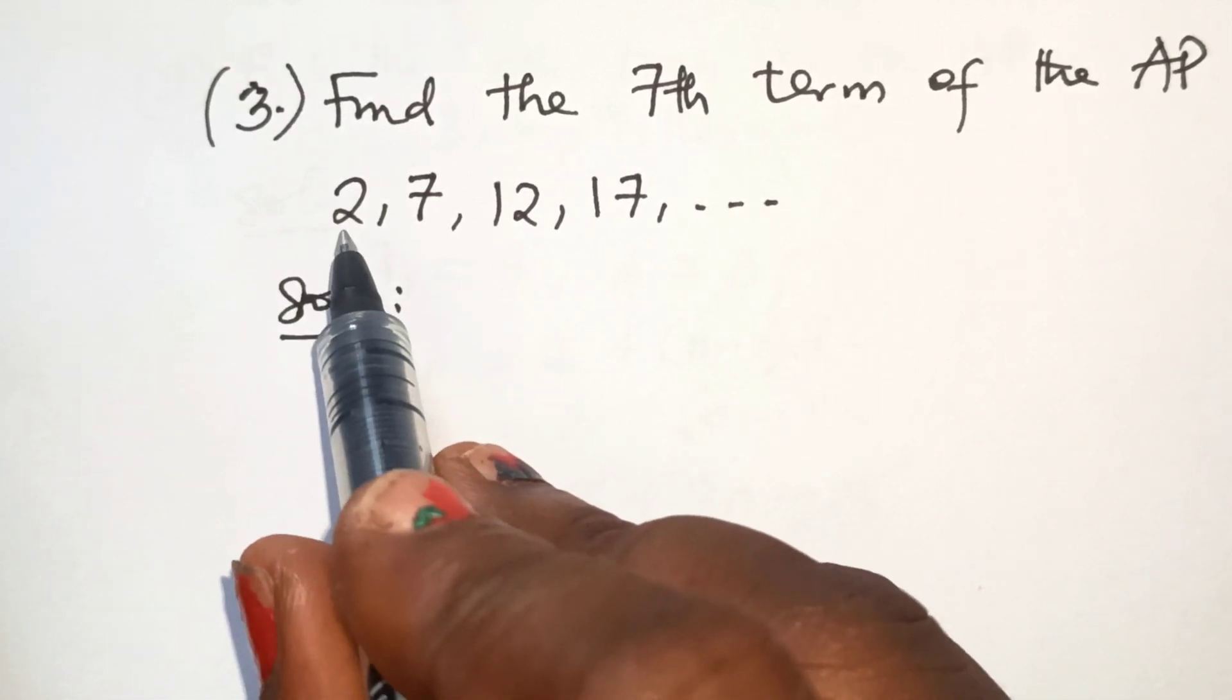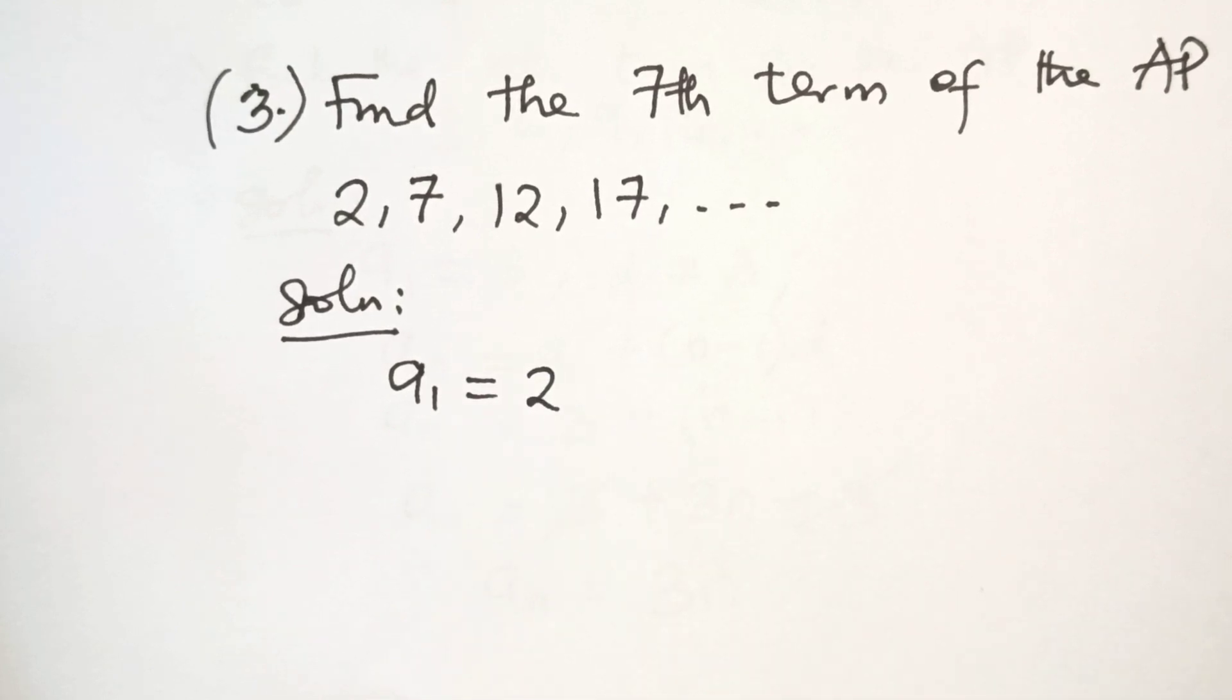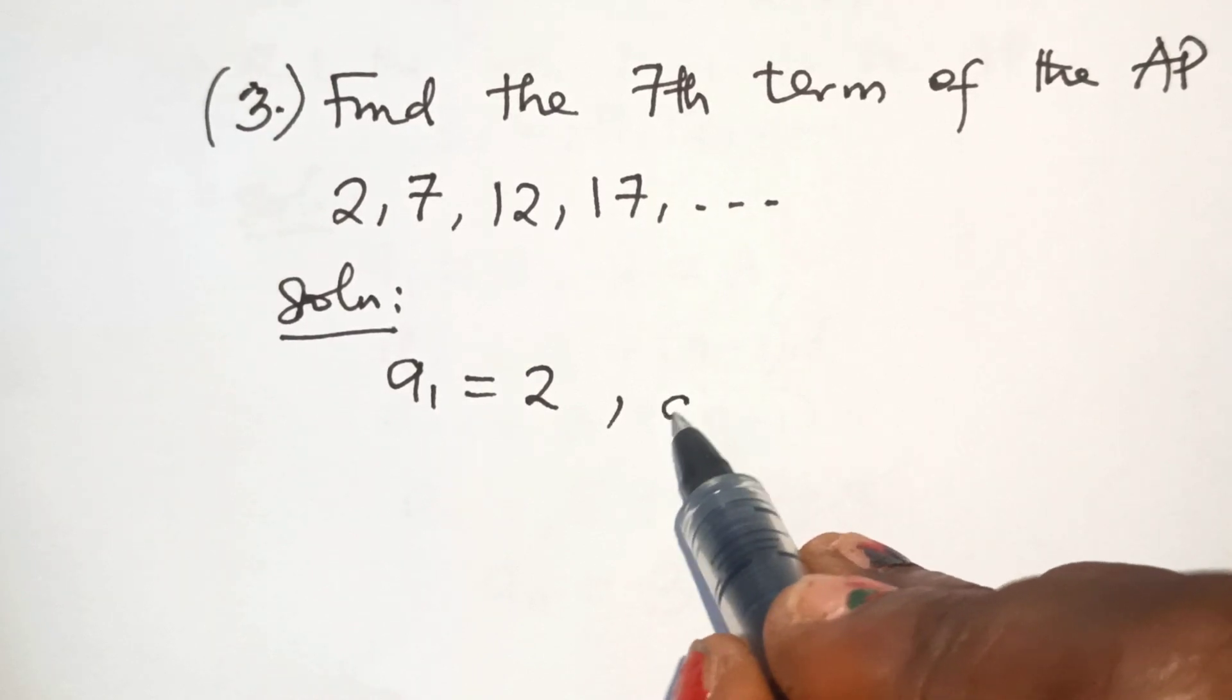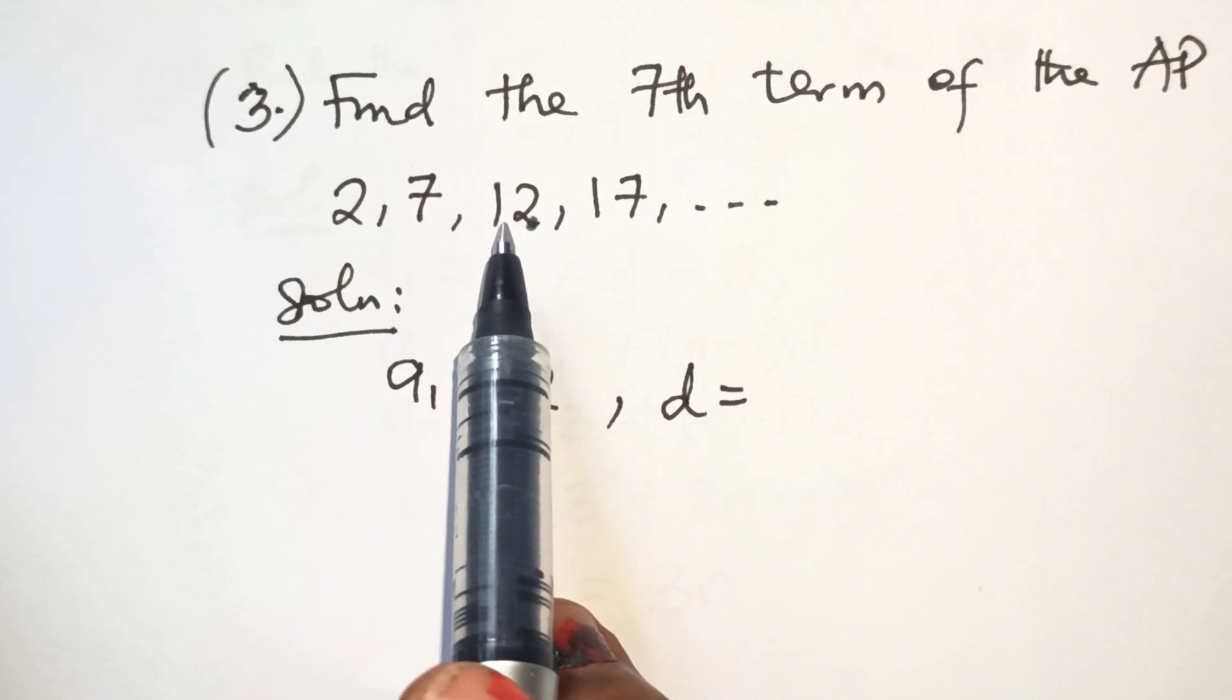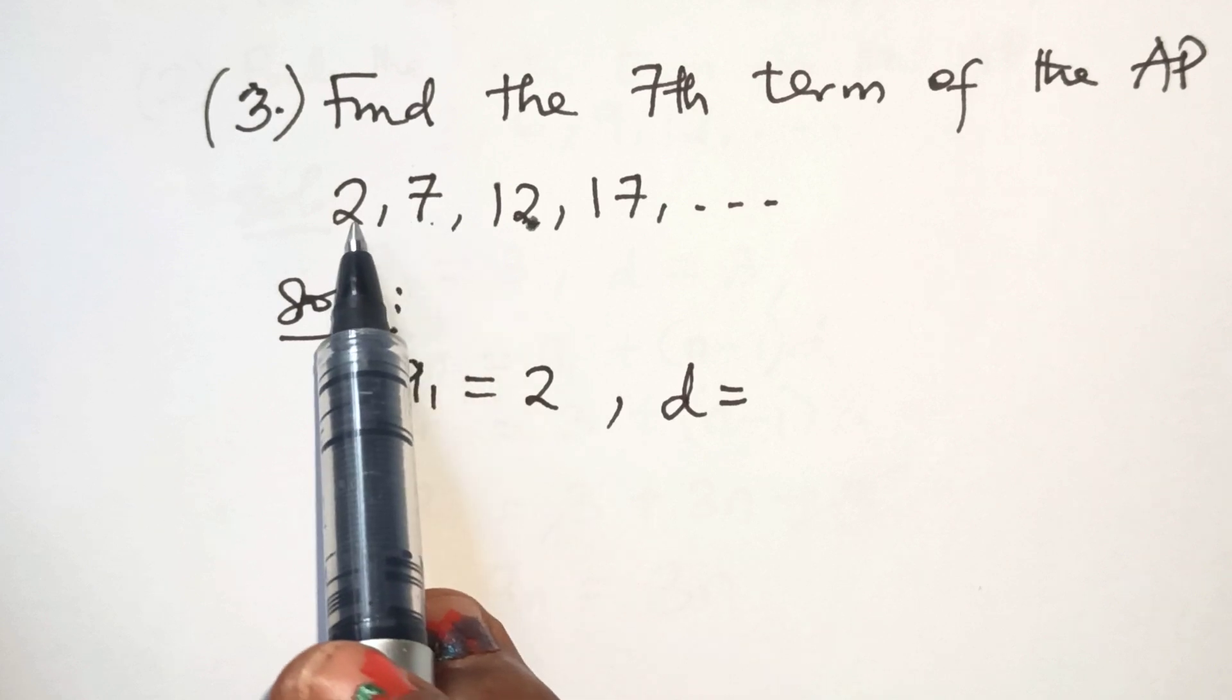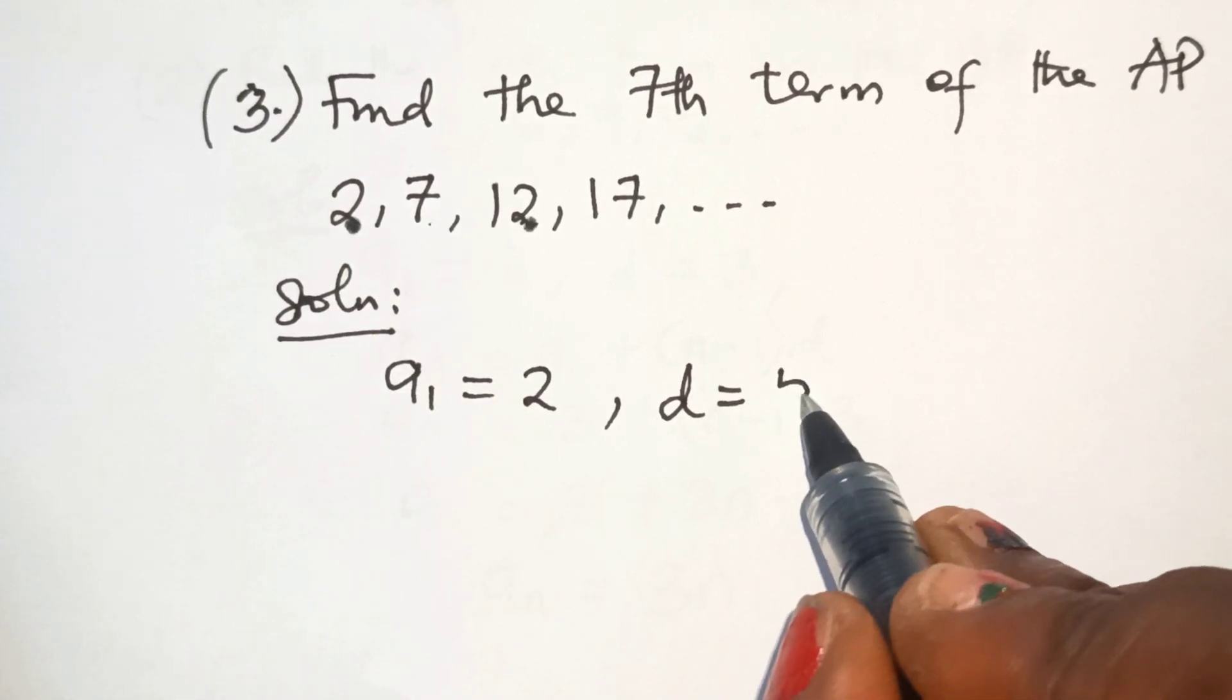The first term is 2, so A1 is equal to 2. The common difference D is equal to, let's check: 17 minus 12 is 5, 12 minus 7 is 5, 7 minus 2 is also 5. So D is equal to 5.